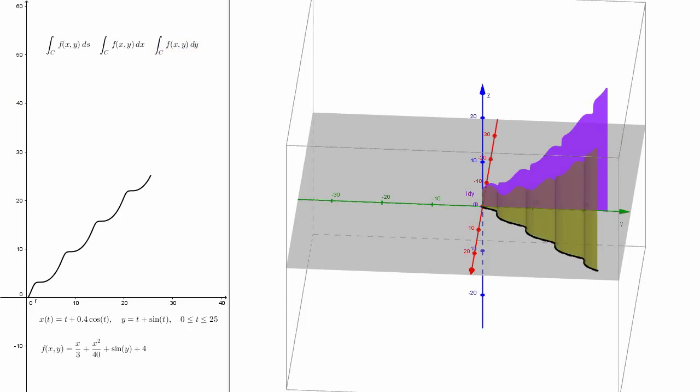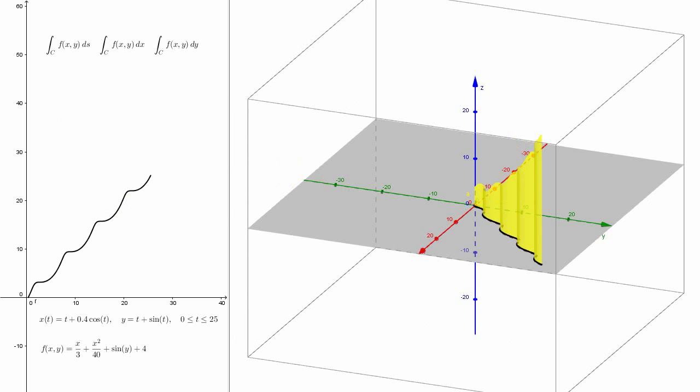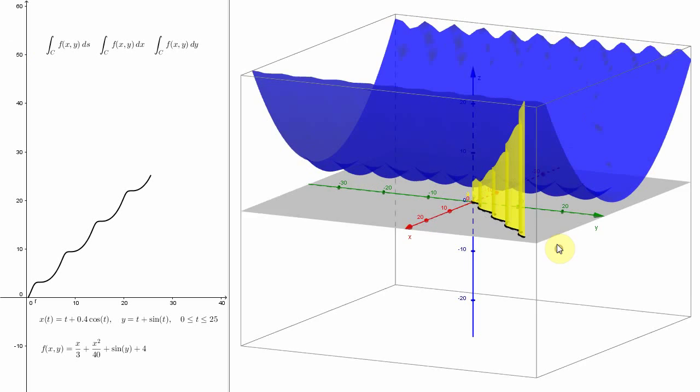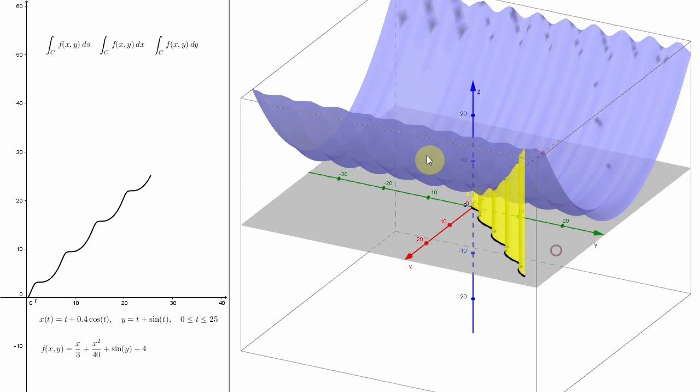Now the thing with the yellow curve, let me hide that purple one here. The thing with this yellow curtain or yellow surface is this was all the points that were above the black parametric curve and under the blue.